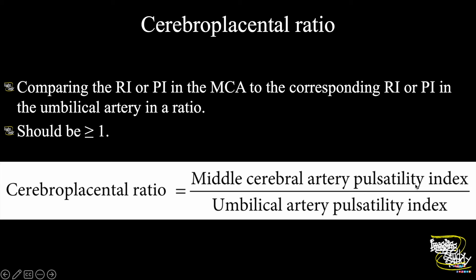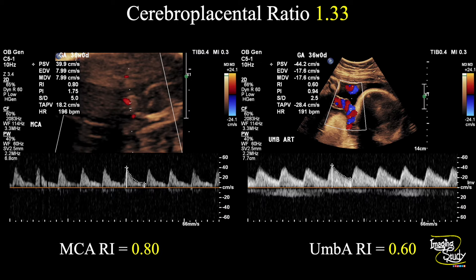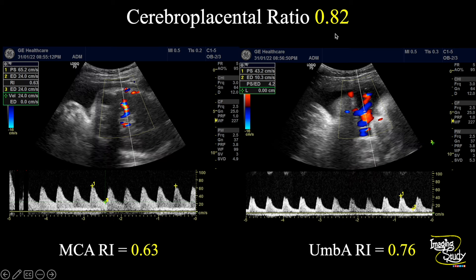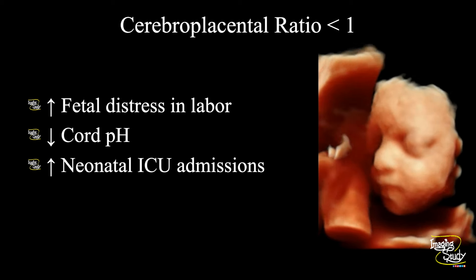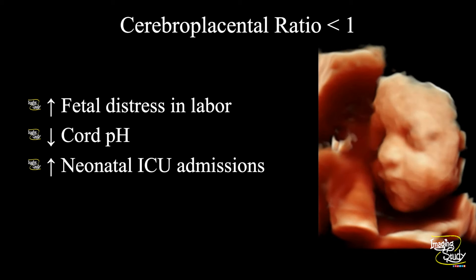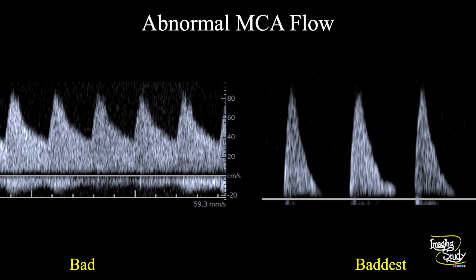The cerebro-placental ratio (CPR) compares the MCA resistive index or pulsatility index to the umbilical artery RI or PI. The MCA should always have higher resistance, so this ratio should always be more than 1. If you see it less than 1, that indicates brain sparing effect and is abnormal. For example: MCA RI 0.8 and umbilical artery RI 0.6 gives CPR 1.3 — normal. But if umbilical artery RI is quite high and CPR comes to 0.8, that is a bad sign, indicating the fetus may need NICU support. At the later stage, if the body fails to manage, diastolic flow will decrease and eventually absent end diastolic flow will occur — the worst outcome.